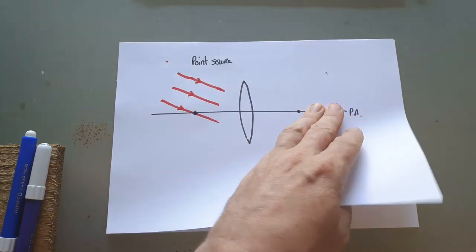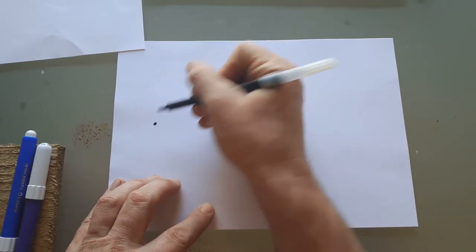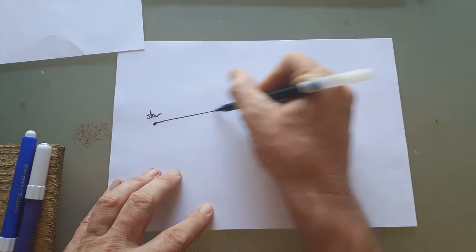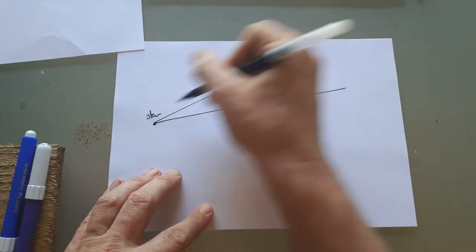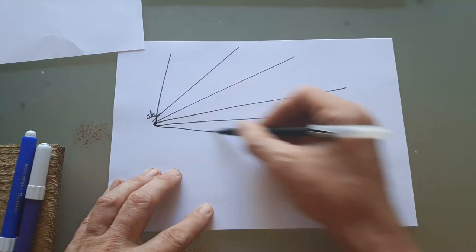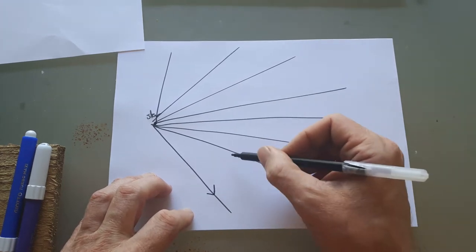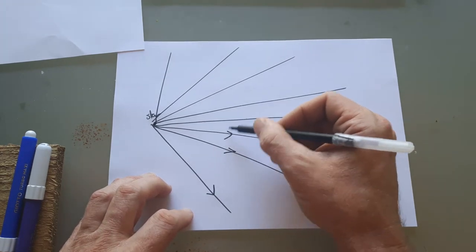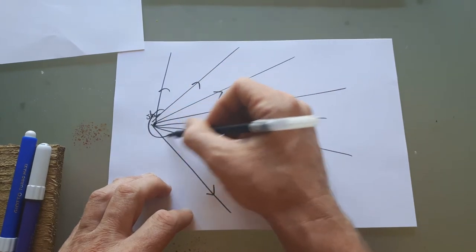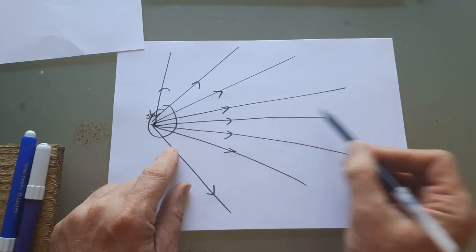I'll just draw another diagram. Here's my point source, my star, my distant galaxy. The rays of light from that star or galaxy will radiate outwards in all directions. I won't draw them all, but the light is radiating out in all directions. When you're very close to the star, you can see that these rays of light are all diverging or spreading out, so all the rays are pointing away from each other.